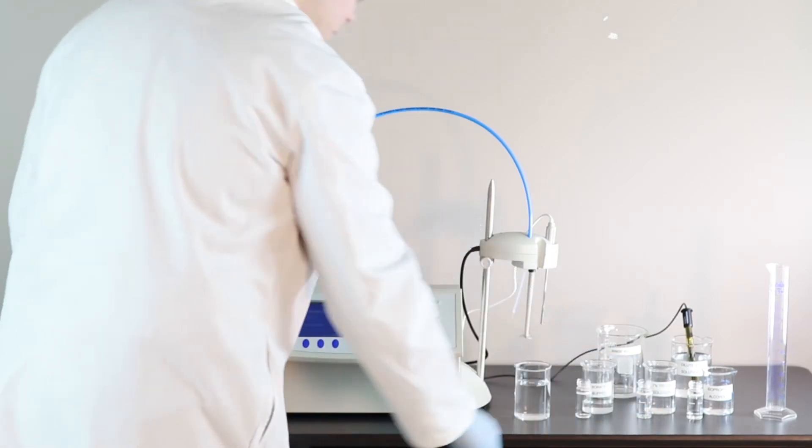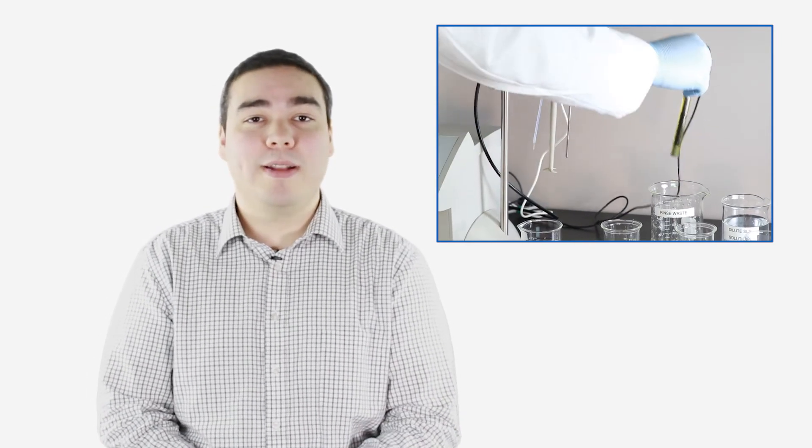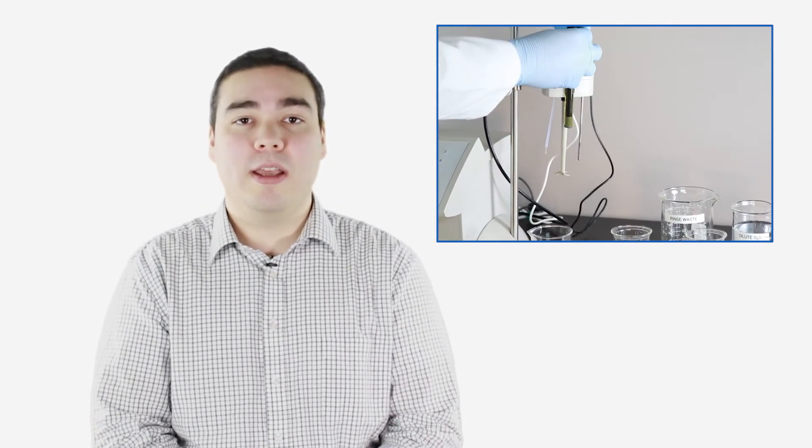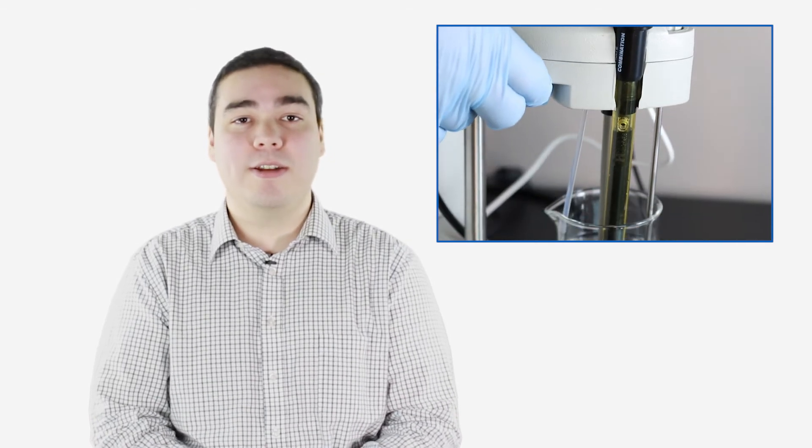While preparing the sample, it's good practice to soak the electrode in a dilute sodium lauryl sulfate solution to help improve the electrode response. I'll rinse it off with some water, place the electrode in the holder, and lower the electrode and stirrer into our sample beaker.